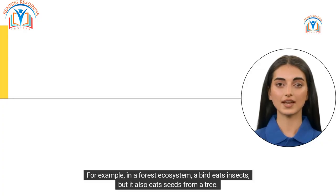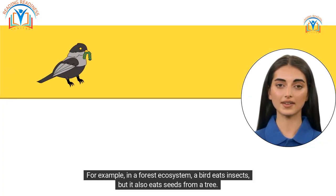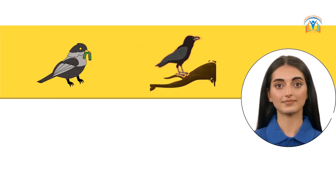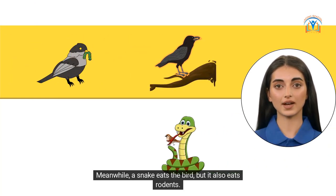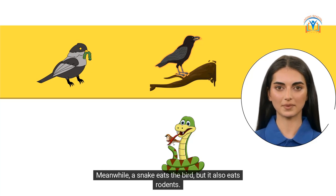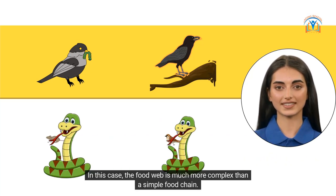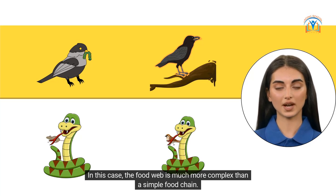For example, in a forest ecosystem, a bird eats insects but it also eats seeds from a tree. Meanwhile, a snake eats the bird but it also eats rodents. In this case, the food web is much more complex than a simple food chain.